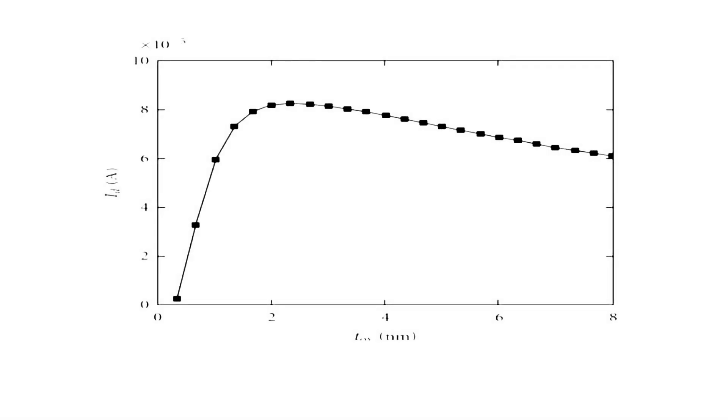X-axis is threshold voltage and Y-axis is drain current. When drain current increases, the mobility decreases. Thank you guys.